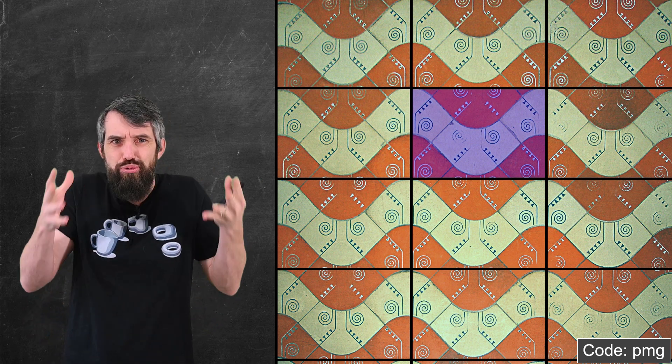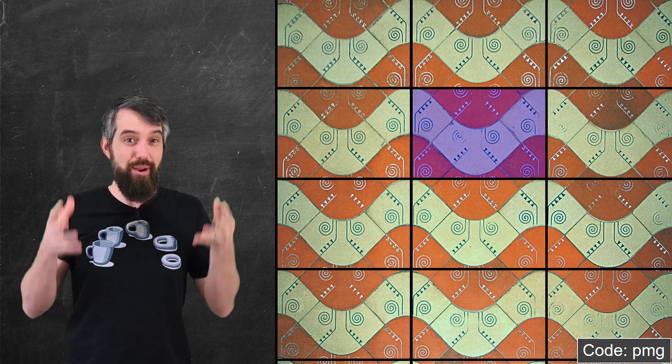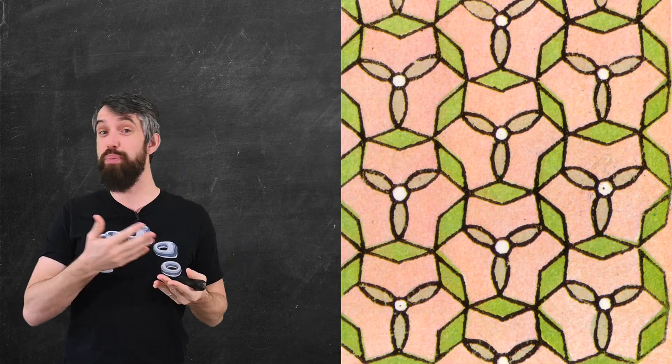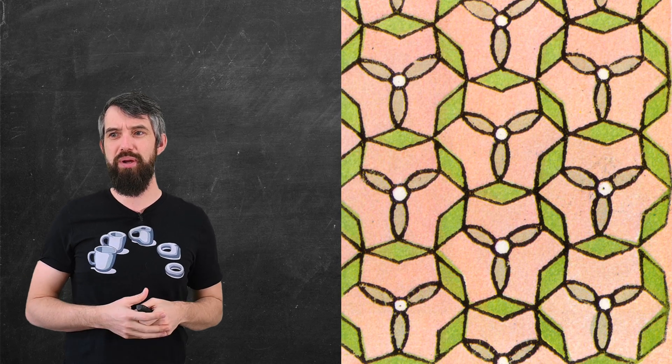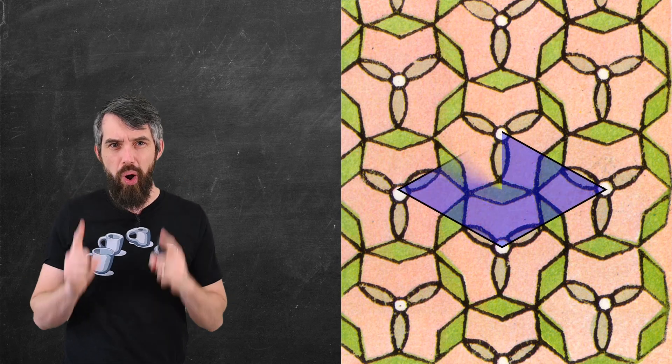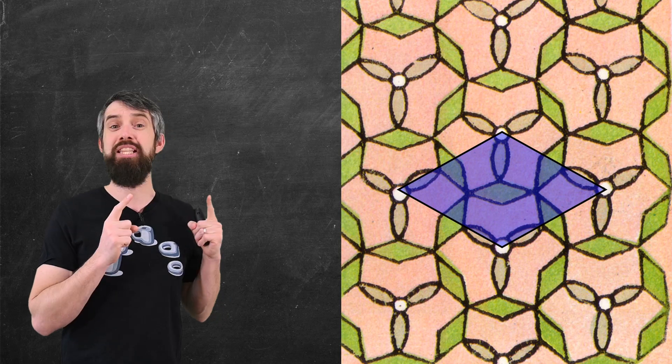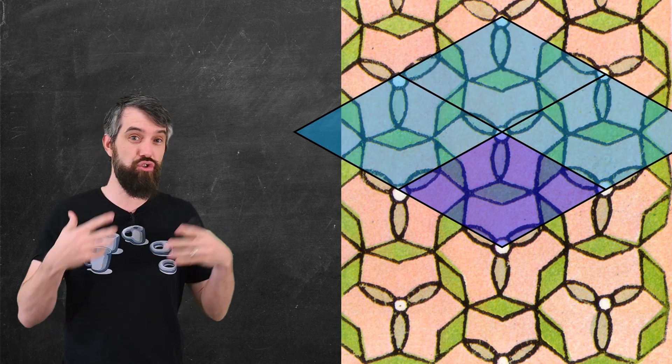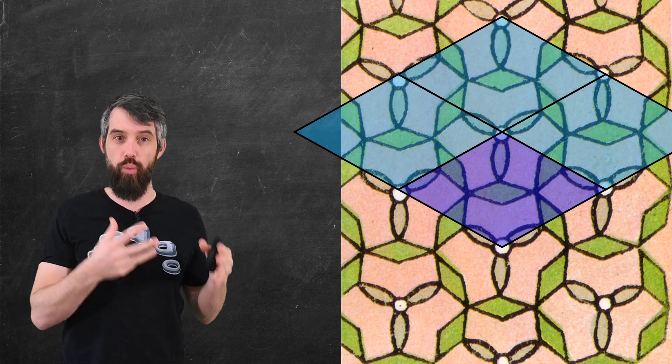Now, in this example, the sort of primitive cell that I was copying over and over again was a rectangle. But that's not the only possibility. For example, in this one, this is some Persian glazed tile, that what you're going to experience is actually a rhombus. And that is the basic primitive tile that's translated all the way around the wallpaper.